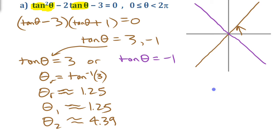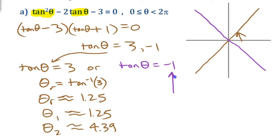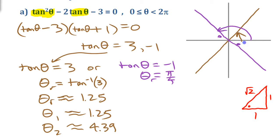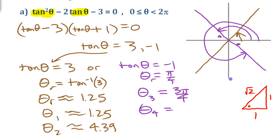Those are our first two solutions. For the other factor, tangent equals negative 1. You should recognize that tangent being 1 is a special triangle — it's the 1, 1, root 2 triangle at 45 degrees, where opposite equals adjacent. So pi over 4 is the reference angle. Theta 3 in quadrant 2 is pi minus pi over 4, which is 3pi over 4. Theta 4 in quadrant 4 is 2pi minus pi over 4, which is 7pi over 4.